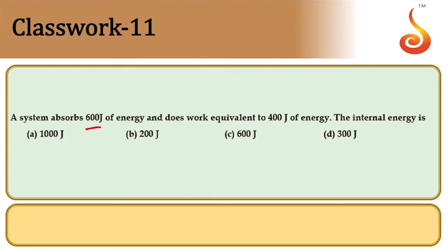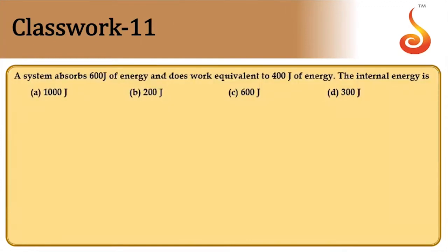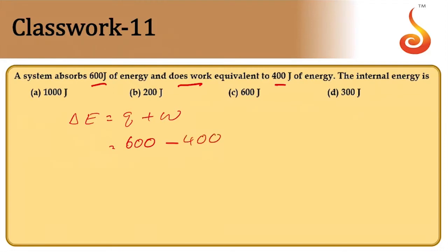A system absorbs 600 joules of energy and does work equivalent to 400 joules. What is the change in internal energy? From the first law: ΔE = q + w. Energy absorbed is 600 J; work done by the system is −400 J. Therefore ΔE = 600 − 400 = 200 joules. Answer is option B.